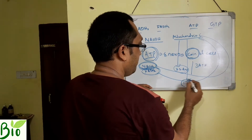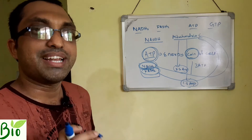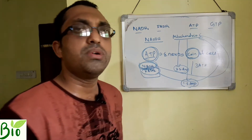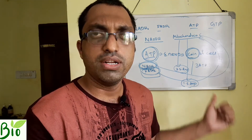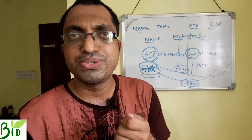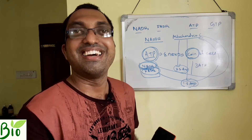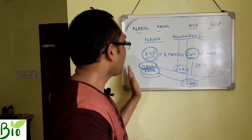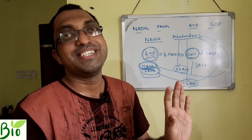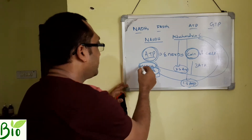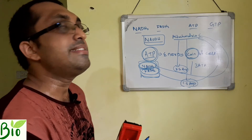I have mentioned NADH2 and FADH2 as checks. In the market, suppose you have to buy gold worth 10 lakh rupees — will you go with coins or paper notes? Never. You will go with a check. NADH2 and FADH2 are called the checks of the cell. The remaining term is NADPH.